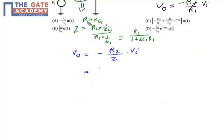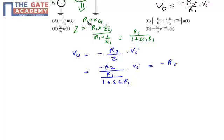Now substituting Z = R1 / (1 + sC1R1), the expression becomes V0 = −R2 / [R1 / (1 + sC1R1)] · Vi, which simplifies to V0 = −R2 · (1 + sC1R1) / R1 · Vi.